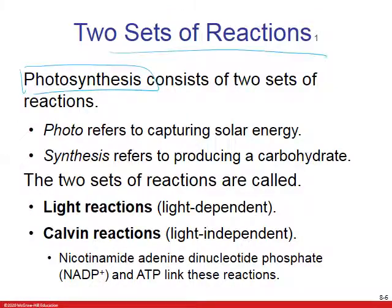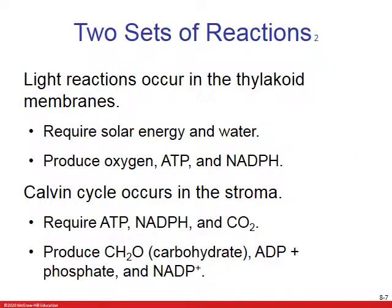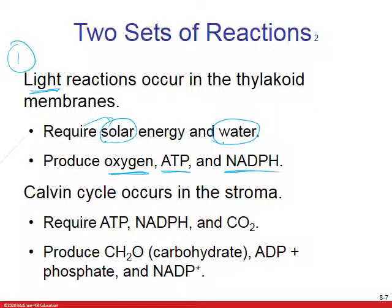In photosynthesis we have two sets of reactions. The first is the light reaction, which is light dependent — you have to have sunlight for it to occur. The second is called the Calvin cycle, which is light independent. We also see a similar coenzyme NAD, except this one is NADP with a phosphate attached. The light reaction requires solar energy and water, and produces oxygen, ATP, and NADPH. The Calvin cycle requires ATP, NADPH, and CO2, and produces carbohydrates.